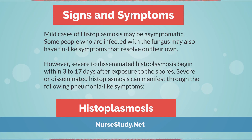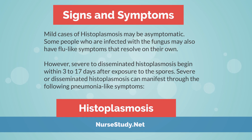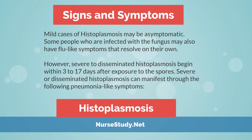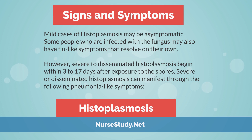Signs and Symptoms of Histoplasmosis: Mild cases of histoplasmosis may be asymptomatic. Some people who are infected with the fungus may also have flu-like symptoms that resolve on their own. However, severe to disseminated histoplasmosis begins within 3 to 17 days after exposure to the spores.